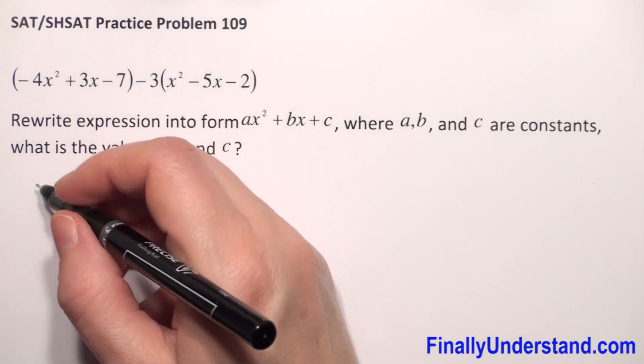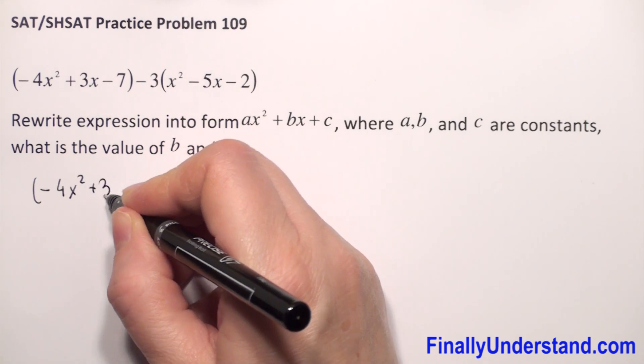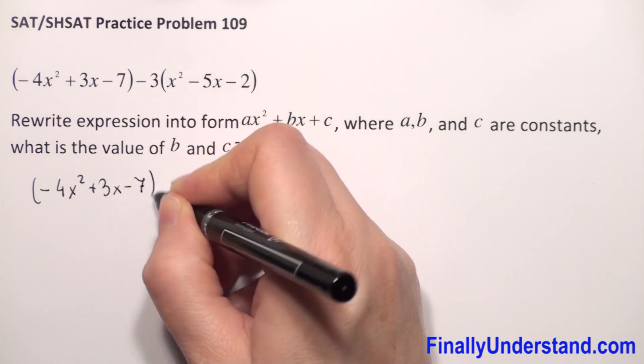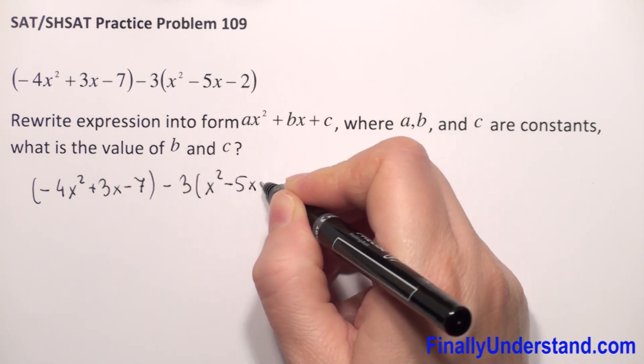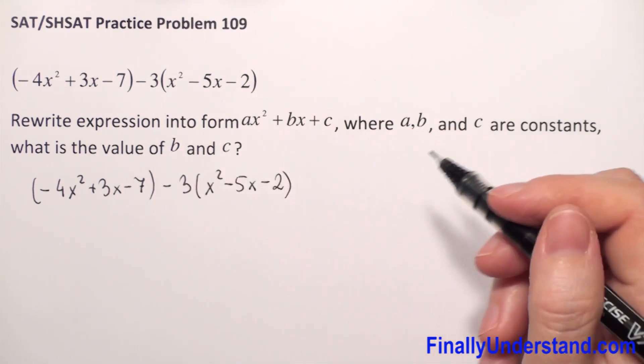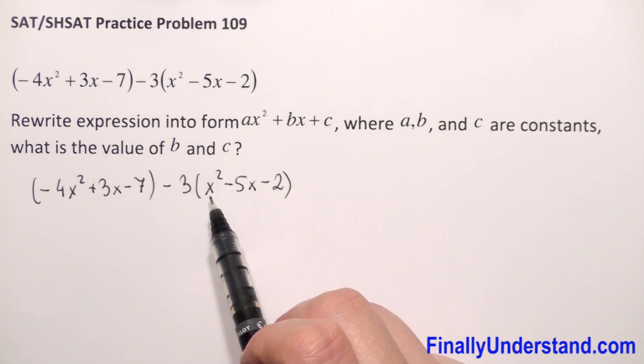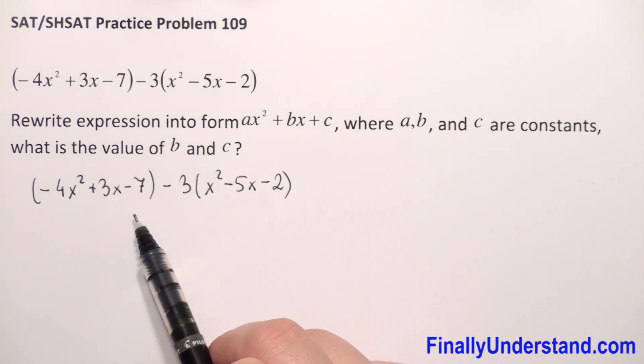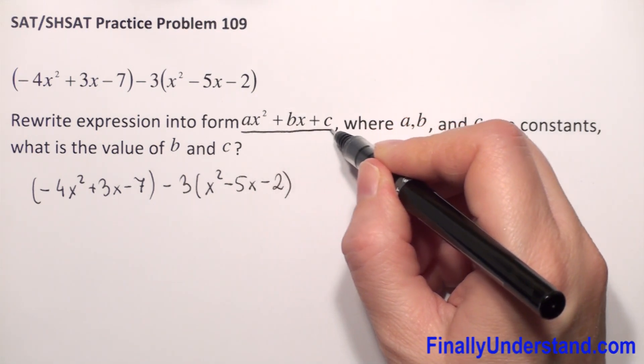We have negative 4x squared plus 3x minus 7, minus 3 times x squared minus 5x minus 2. So to find the value of b and c, first we need to rewrite our expression to this form.